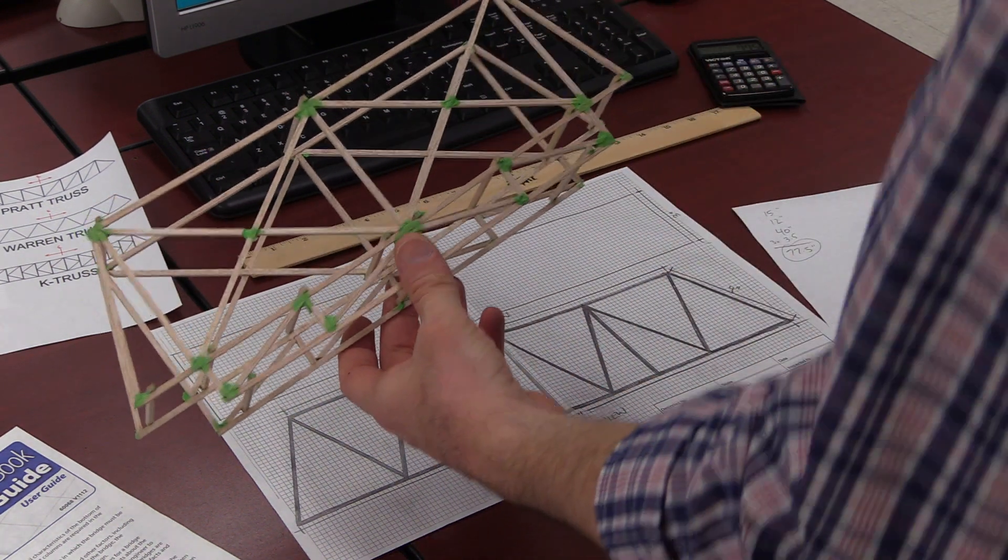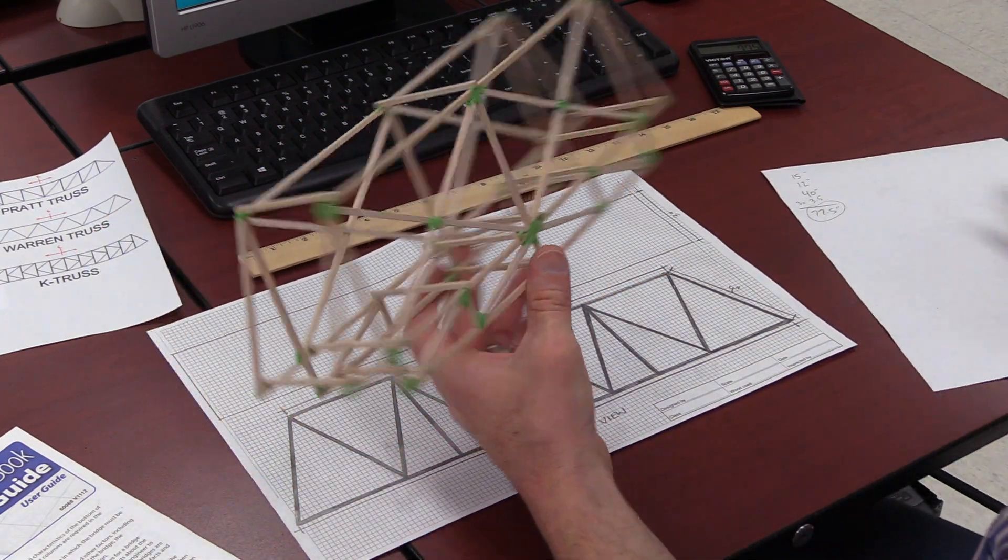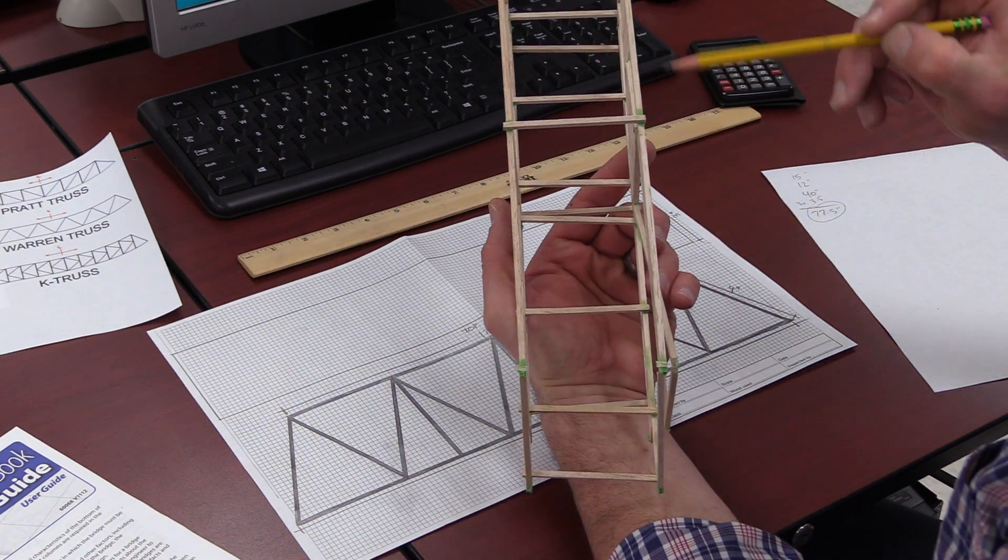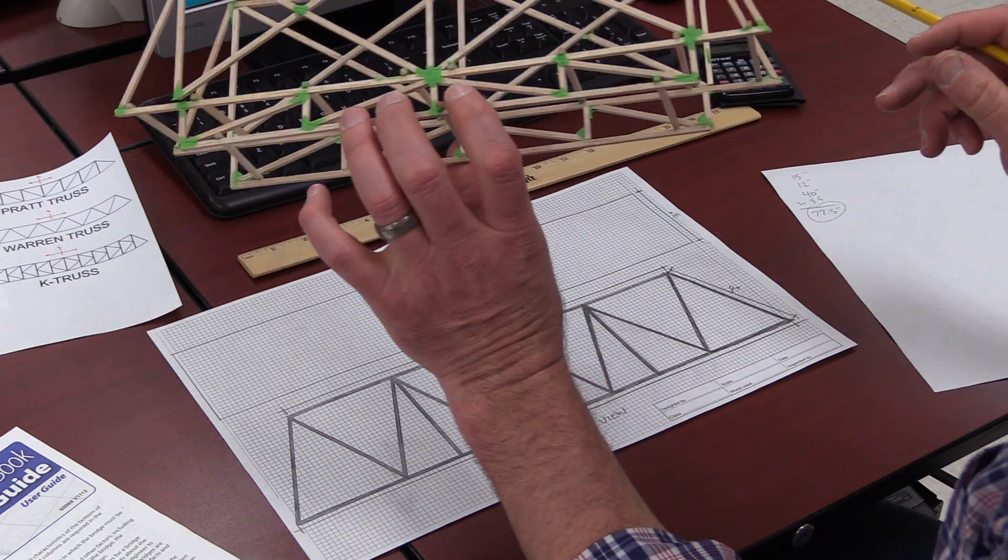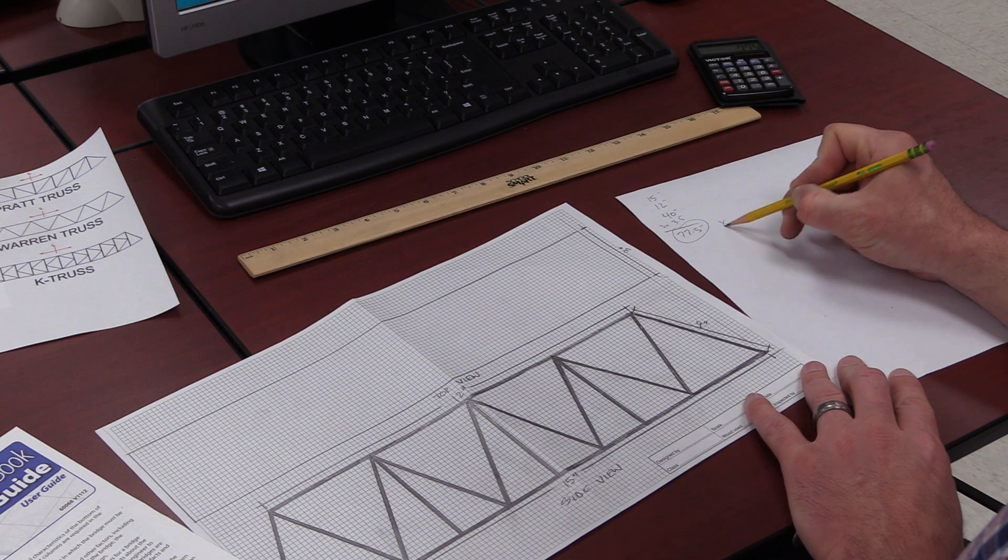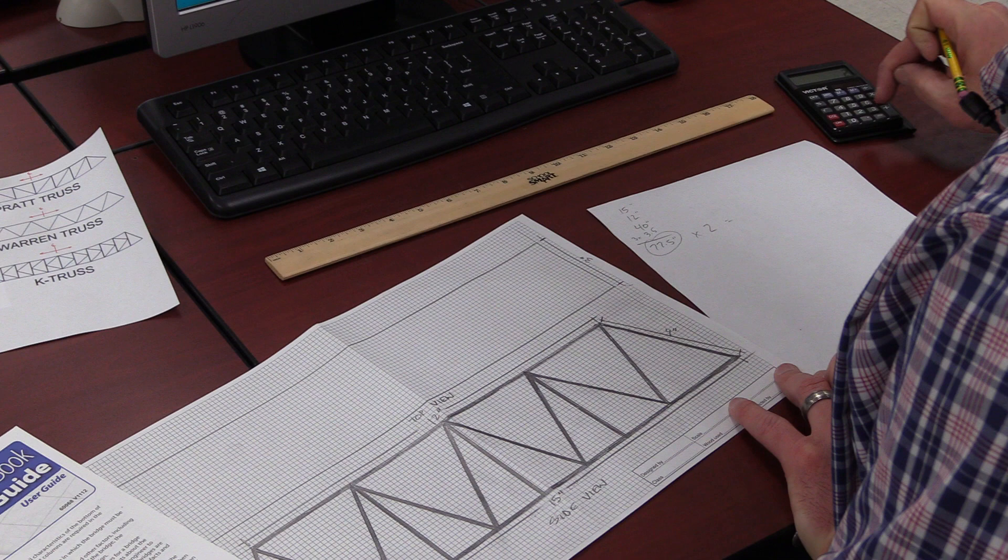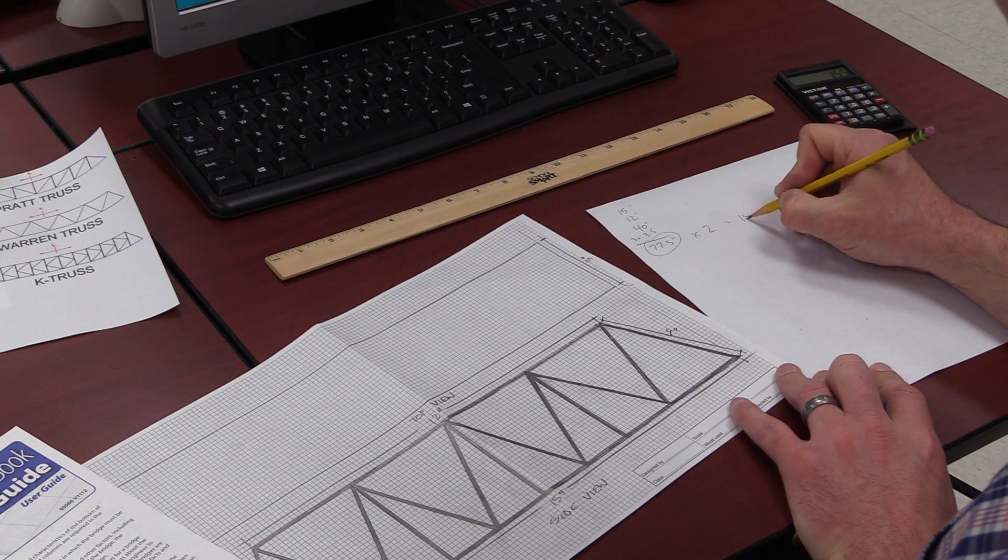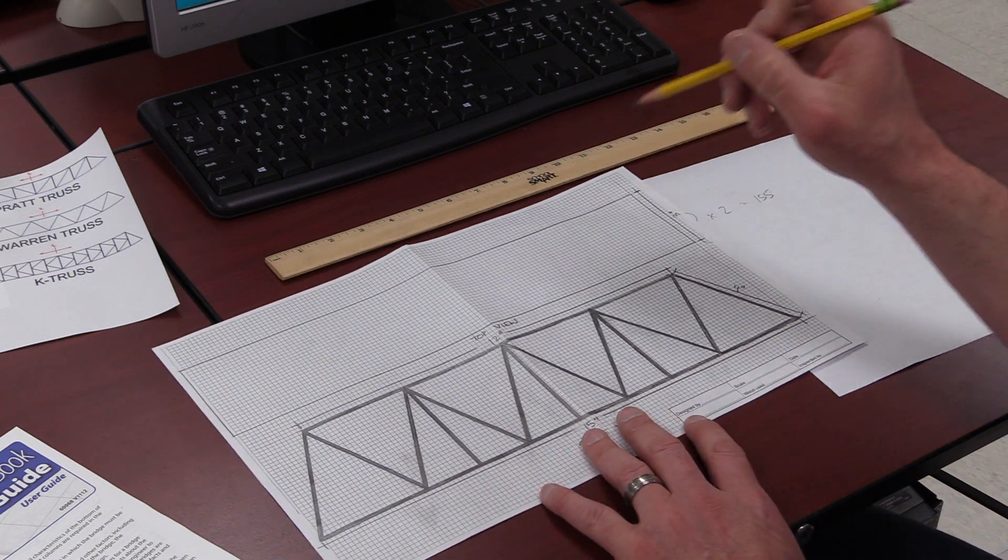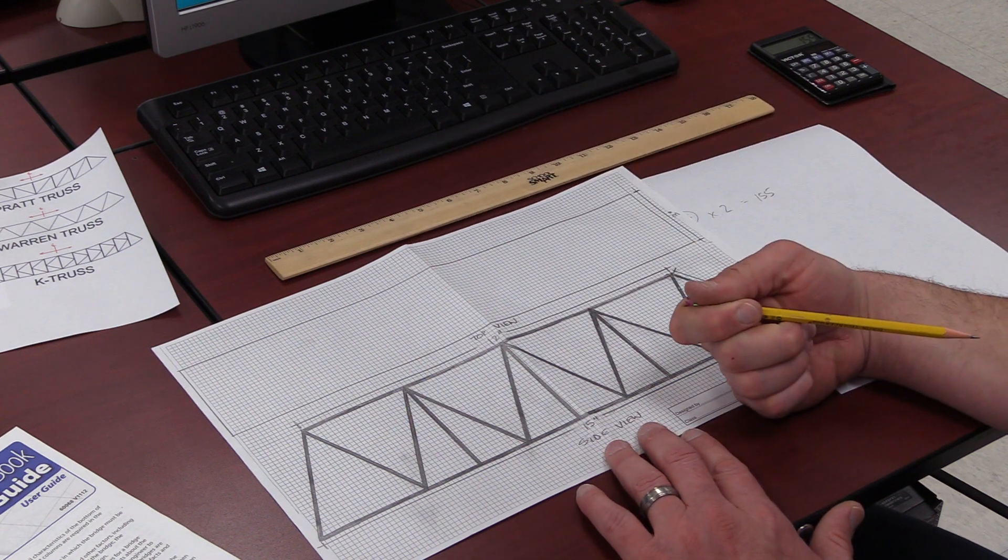This is a bridge from one of our students that participated in this project earlier in the year. You have one truss here and another truss here, and they're identical. So we've got to take this number for one of the trusses and multiply it by two. So that is 155. I've got 155 inches of my balsa wood that I'm going to use just building the two trusses.